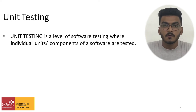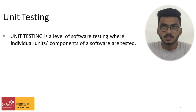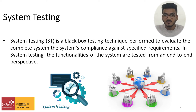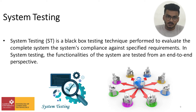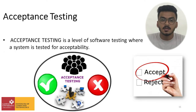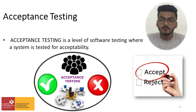Unit testing is a level of software testing where individual units or components of software are tested. System testing is a black box testing technique performed to evaluate the complete system's compliance against specified requirements. The functionalities of the system are tested from an end-to-end perspective. Integration testing is a level of software testing where individual units are combined and tested as a group. Acceptance testing is a level of software testing where a system is tested for acceptability.